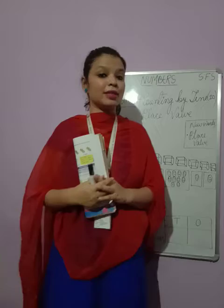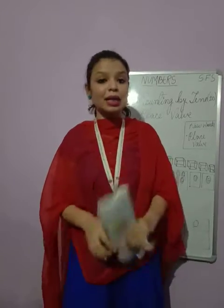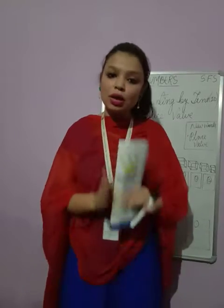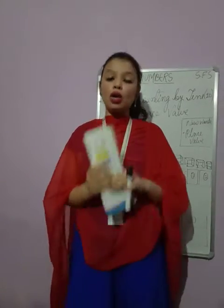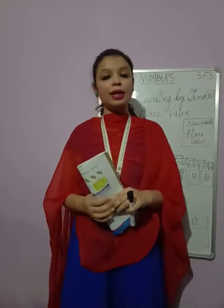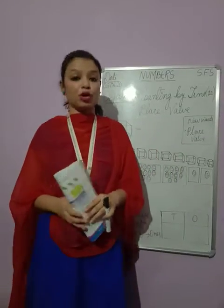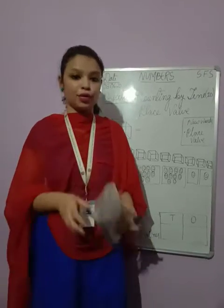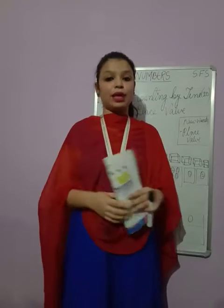Before starting the class, let us recall what we have learned in the previous class. In the previous class, we learned about single or one digit numbers. All the numbers from 0 to 9 are known as single or one digit numbers. And all the numbers from 10 to 99 are known as two digit numbers. We also learned about the value of 0 — when there are no objects or no items to count, we place the number 0, which means it has no value.